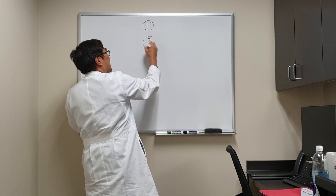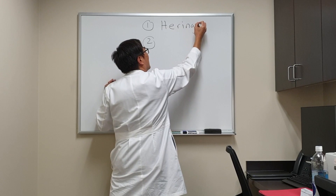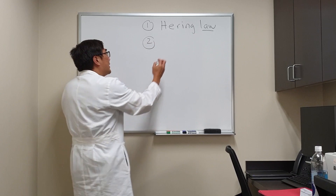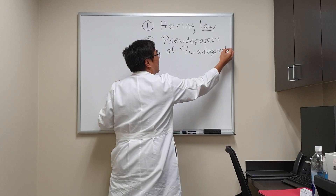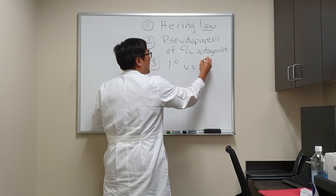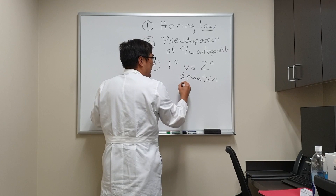What I want to talk to you today about are two very strange things that you need to know about that have relation to a law which we call Hering's Law, like a smoked herring. The things I want to talk to you about are pseudoparesis of the contralateral antagonist, and the second is differentiating the primary versus the secondary deviation and how which eye is fixing determines that.